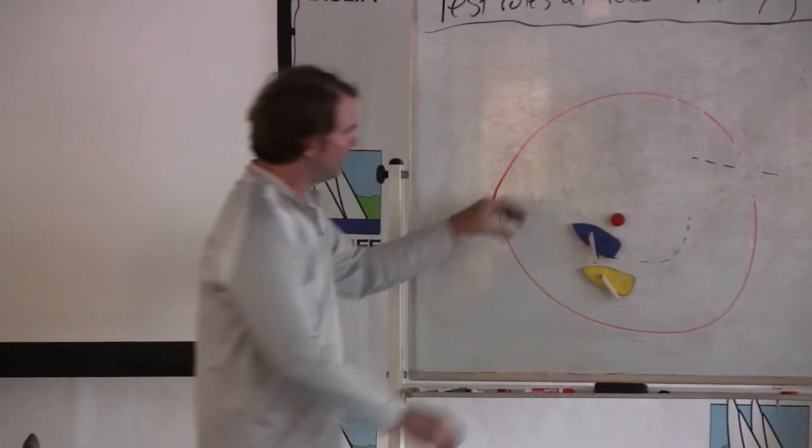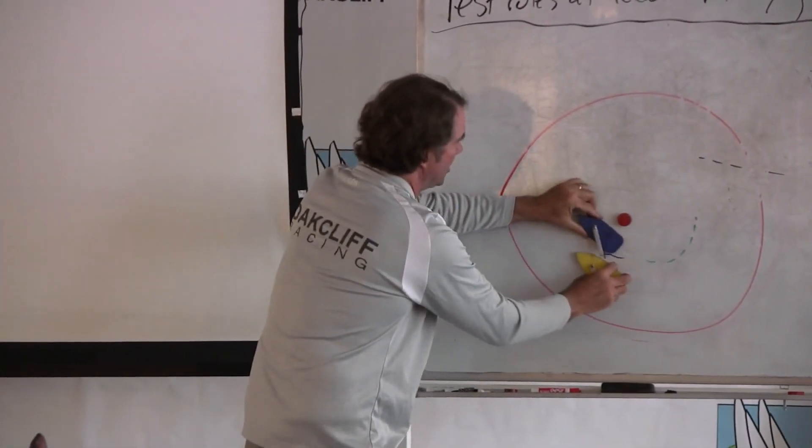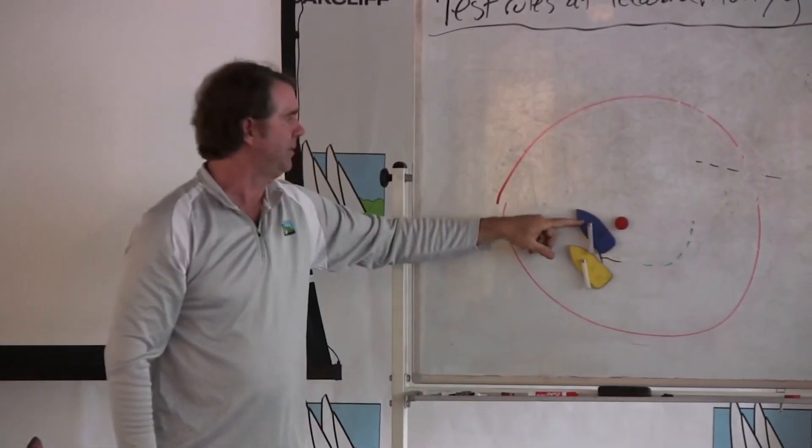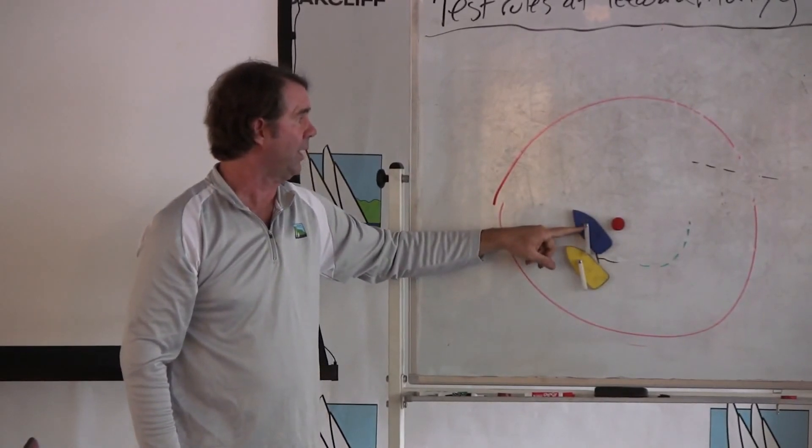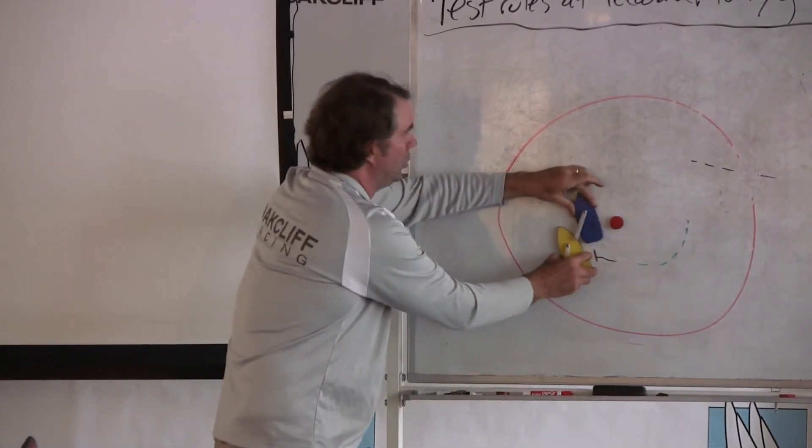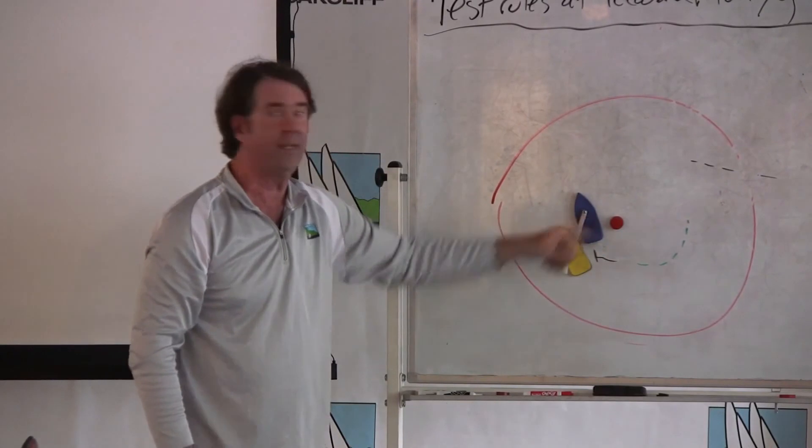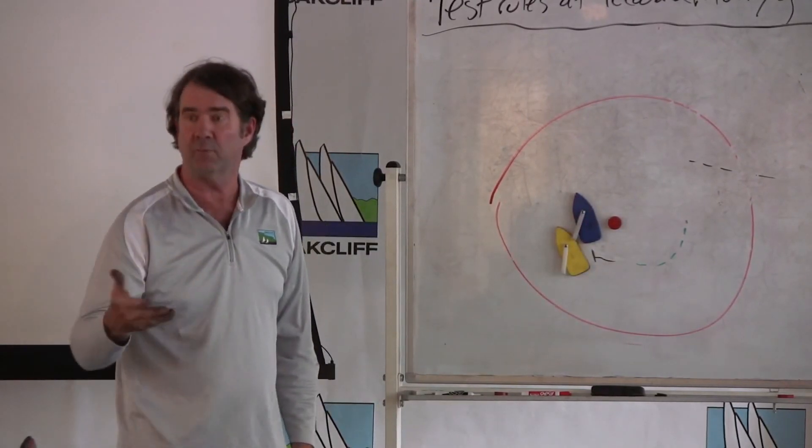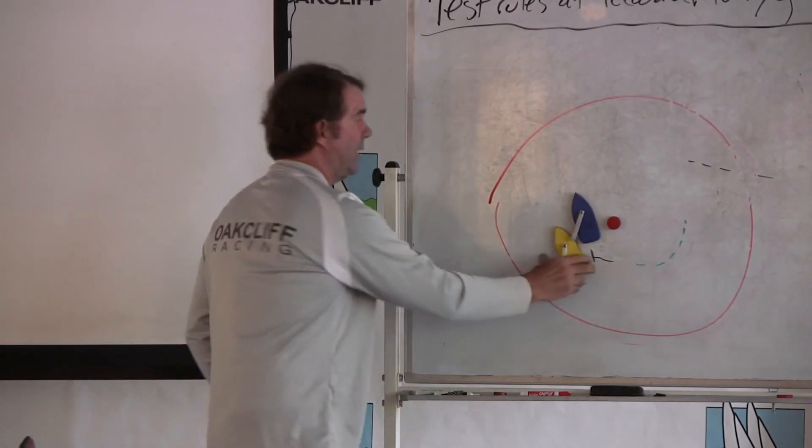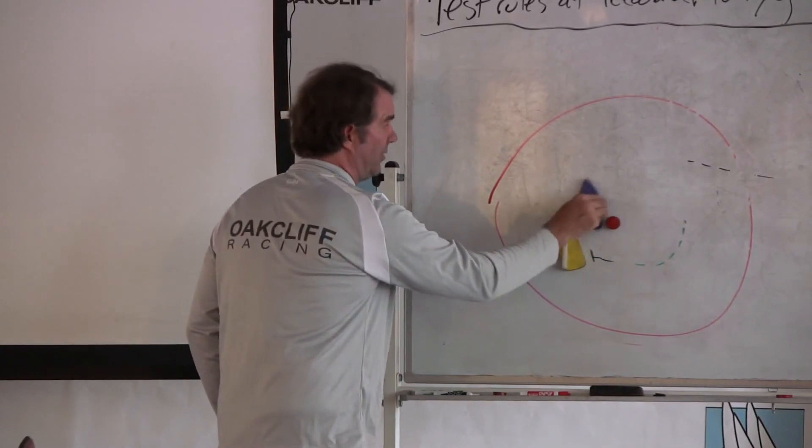Under the current rules, yellow just needs to give blue room between her and the mark in a seaman-like way. Once blue can respond to yellow's luff without hitting the mark, she's been given room in a seaman-like way. So yellow can luff sooner and cause blue to tack.